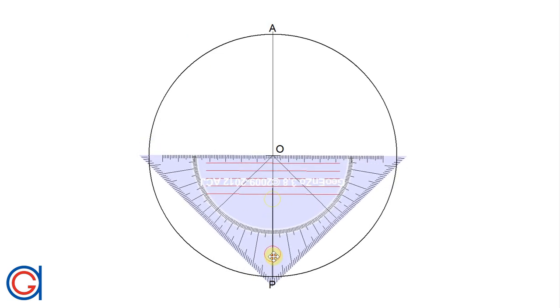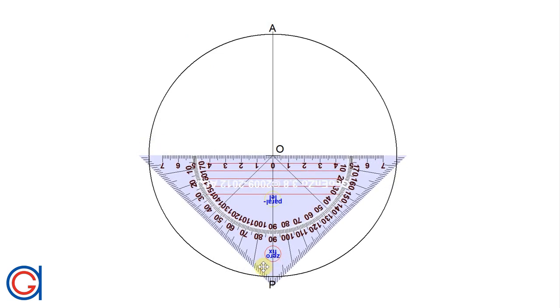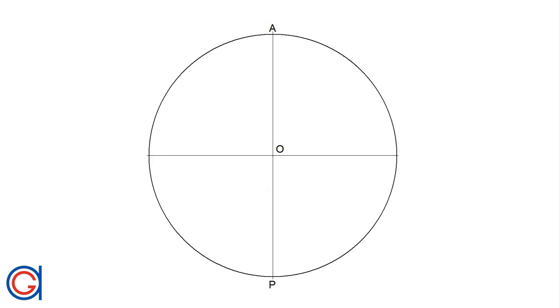The next step is to draw a perpendicular horizontal diameter, and we will call the extremities of this one Q and R, as can be seen here.